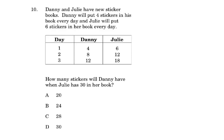Last question. Danny and Julie have a new sticker book. Danny will put four stickers in his book every day and Julie will put six stickers in her book every day. So let's go. D for Danny and J for Julie.